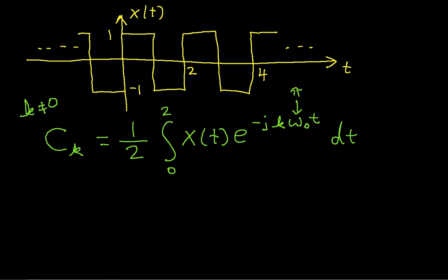As I did when I was computing c₀, I need to break this integral into two pieces because x(t) between 0 and 1, x(t) is 1. So I will break this into two different integrals: the integral from 0 to 1 of 1 times e^(-jkπt) dt plus the integral from 1 to 2 of -1 times e^(-jkπt) dt.